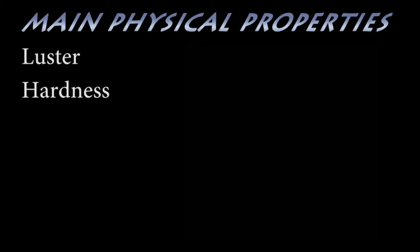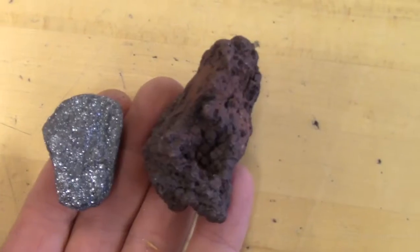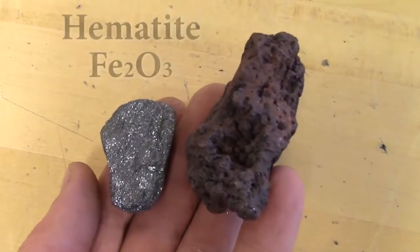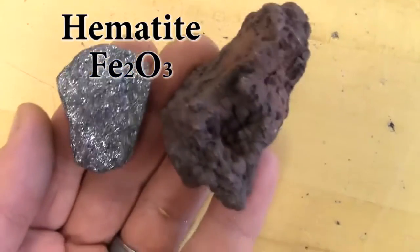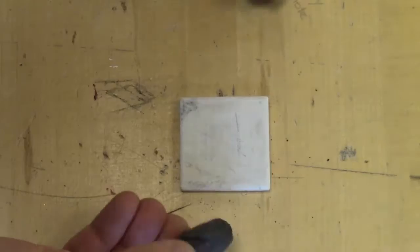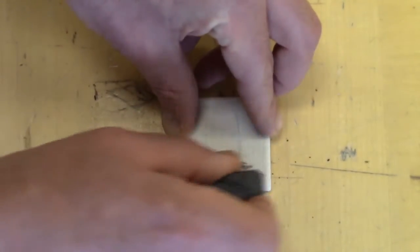Our next diagnostic property is streak. Some microcrystalline minerals may have more than one color. Due to the size and alignment of their crystals, they may have more than one luster too. But if we turn the mineral into a powder, it gives a diagnostic color.